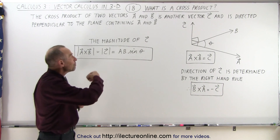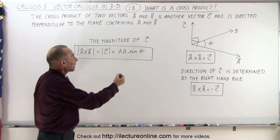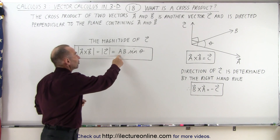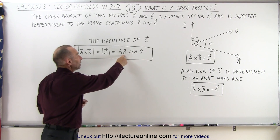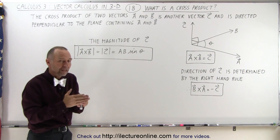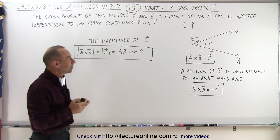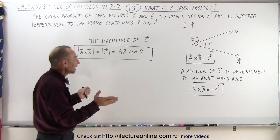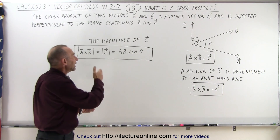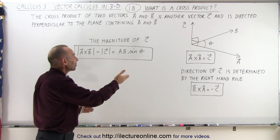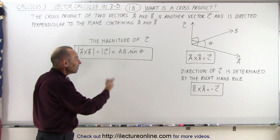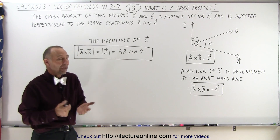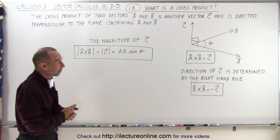At 90 degrees you get the maximum magnitude of C, the cross product, which is simply the magnitude of A times the magnitude of B. And if the angle between them is zero, then AB times the sine of zero equals zero — the cross product will equal zero, with no magnitude at that point.